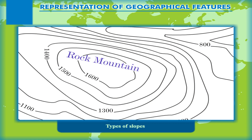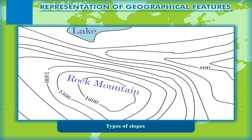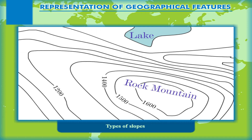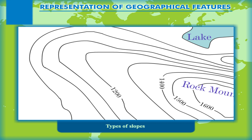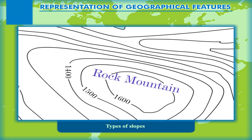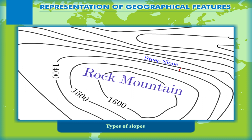Types of Slopes. The horizontal equivalent (HE) on a map is very important as it shows the gradient of the slope of the land. The contours are drawn close to each other when the slope is steep, and they are spaced widely when the slope is gentle. The widely spaced contours show a gentle slope, and the closely spaced contours show a steep slope.